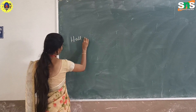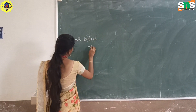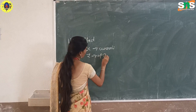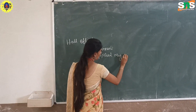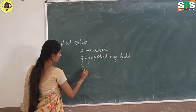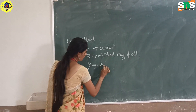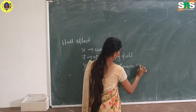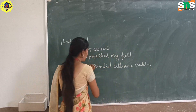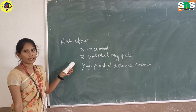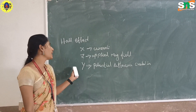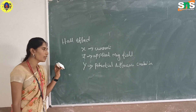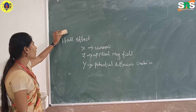The Hall effect: current is in the X-direction, the applied magnetic field is in the Z-direction, and the potential difference is created in the Y-direction. In an N-type semiconductor, the potential difference is created in the negative Y-direction. In a P-type semiconductor, the potential difference is created in the positive Y-direction. These are the differences between N-type and P-type semiconductors in the Hall effect.